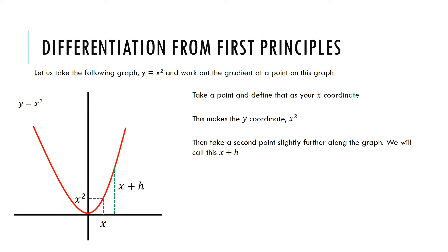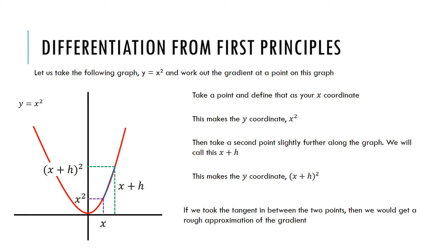If I then take a second point in x and call that x plus h — just slightly further along the graph — I can define my y coordinate as x plus h squared, because y is equal to x squared. Now, if I were to take the tangent between those two points, I would get a rough approximation of the gradient. But I'm interested in knowing how the gradient changes with x — I want to be able to calculate the gradient at any point on that curve. So we can use differentiation to do that.